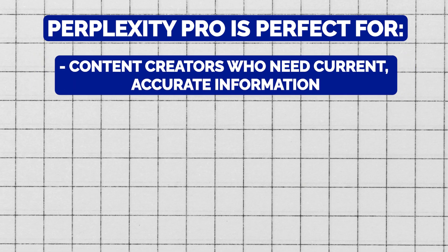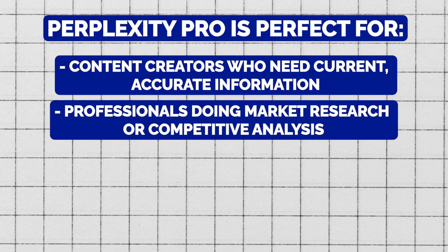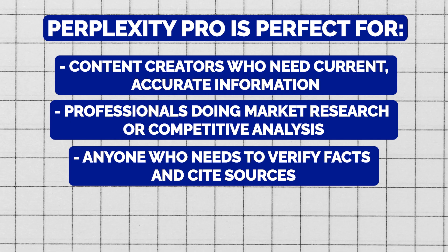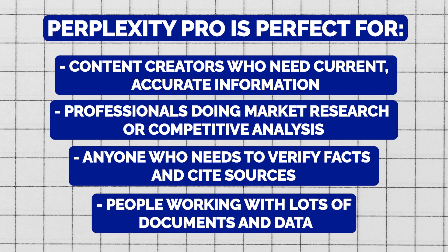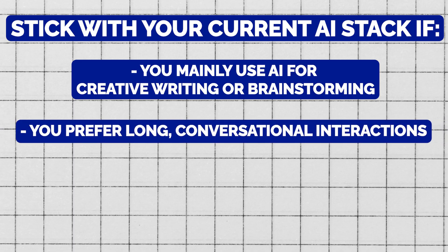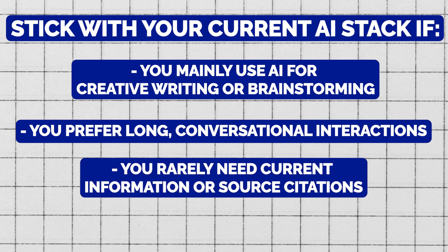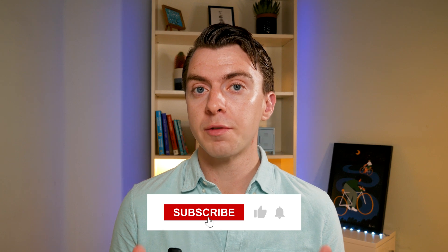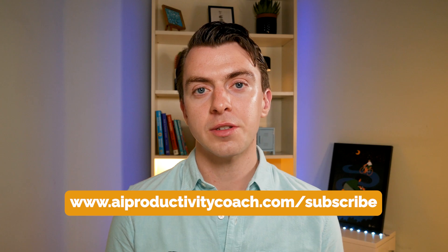In conclusion, Perplexity Pro is perfect for content creators who need current, accurate information; professionals doing market research or competitive analysis; anyone who needs to verify facts and cite sources; or people working with lots of documents and data. You should stick with your current AI tools if you mainly use AI for creative writing or brainstorming, prefer long conversational interactions, or rarely need current information or source citations. If this first-time review of Perplexity Pro helped you, please subscribe to the channel. You can also get my free weekly AI productivity newsletter at aiproductivitycoach.com/subscribe.